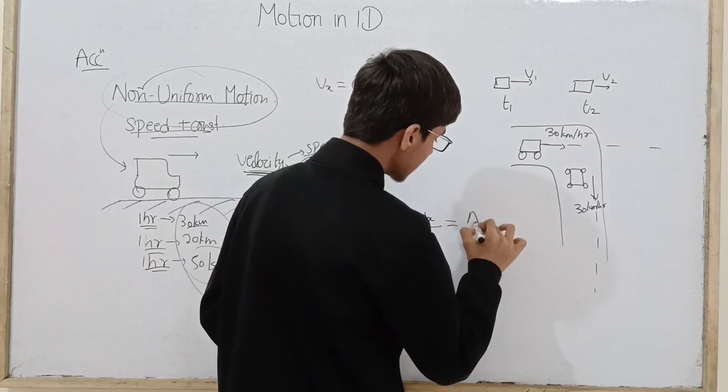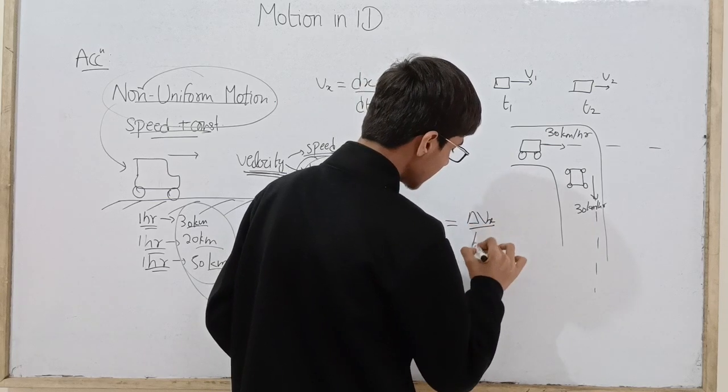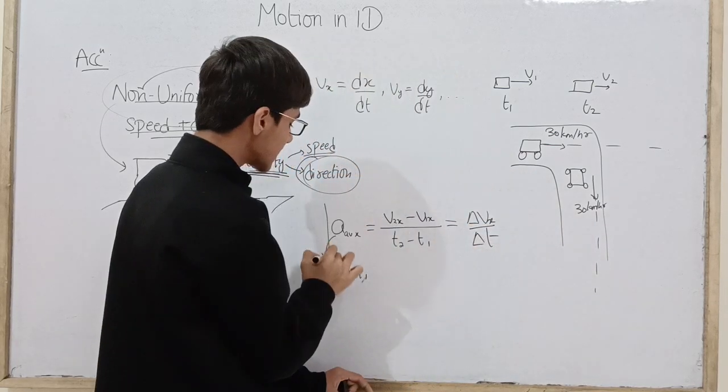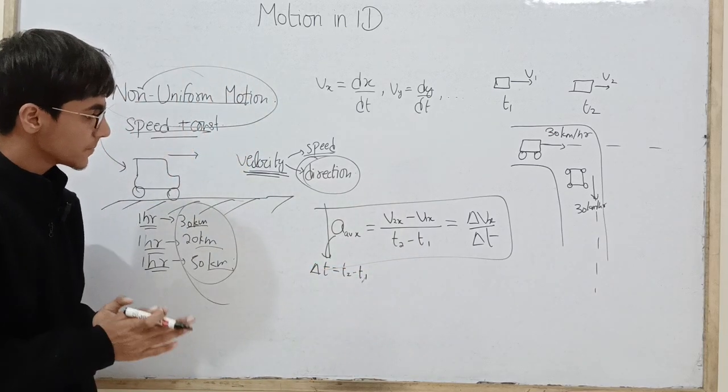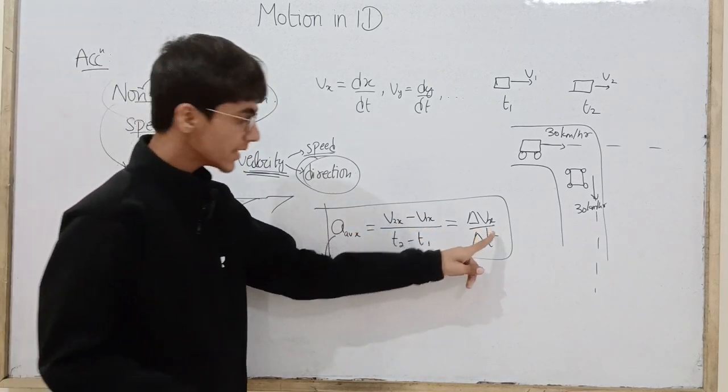So this is the average acceleration during t2 minus t1, Δt time duration. This is the average acceleration clearly.